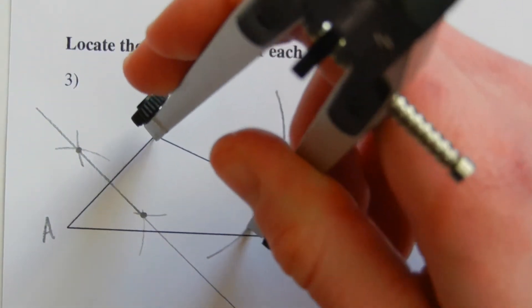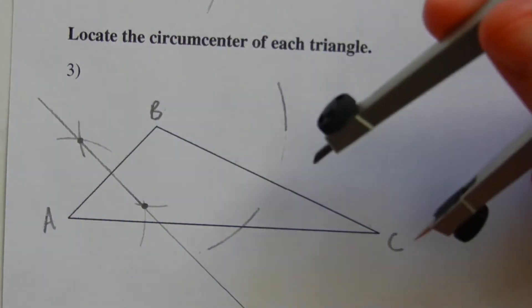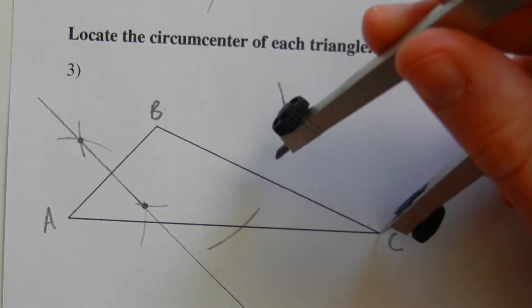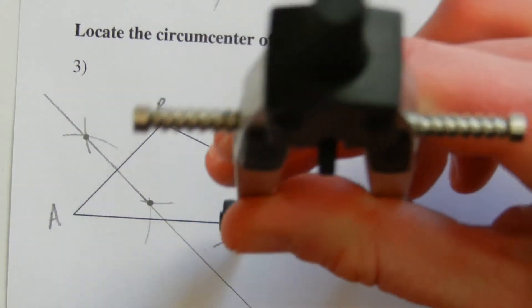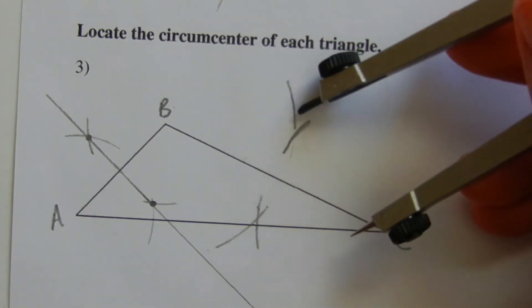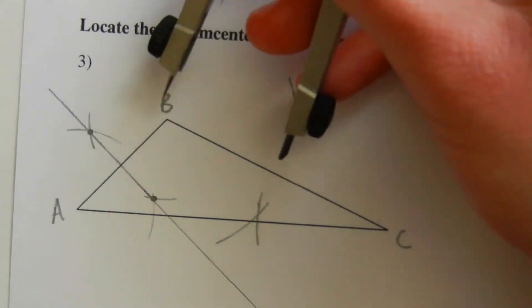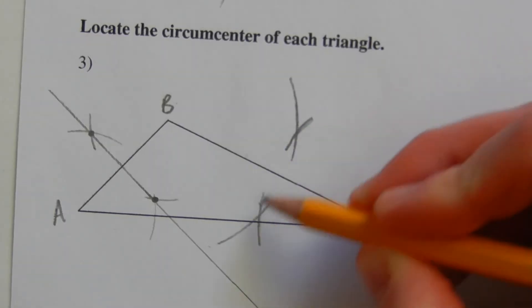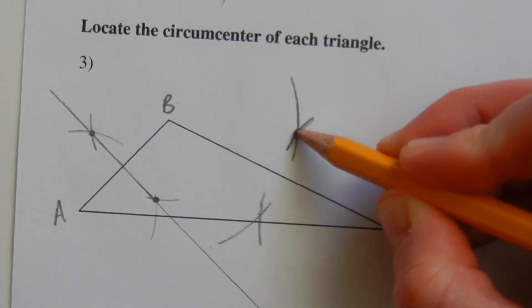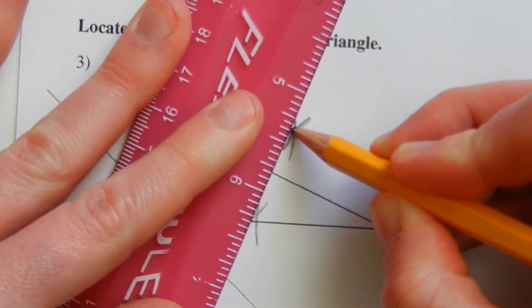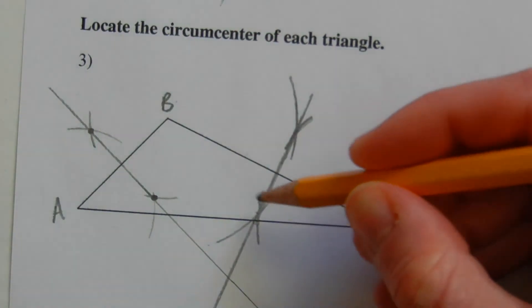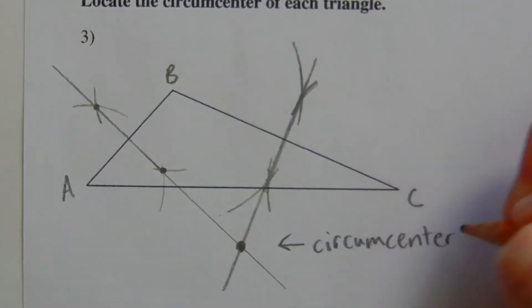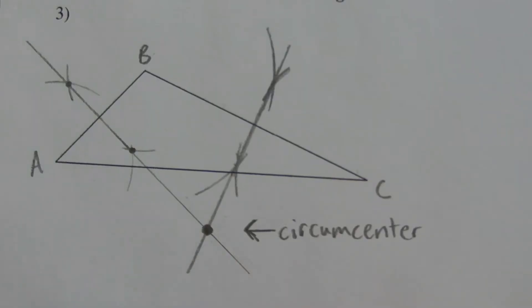Now solving for the perpendicular bisector of BC, making our compass a little more than halfway, I'll draw my mark above line BC and then below. Same for endpoint C — mark slightly above and slightly below. Since the intersection isn't perfectly visible, I'll go back to B, keep the same compass measurement, and extend the arc further until I have the intersection. Then I can draw my perpendicular bisector.